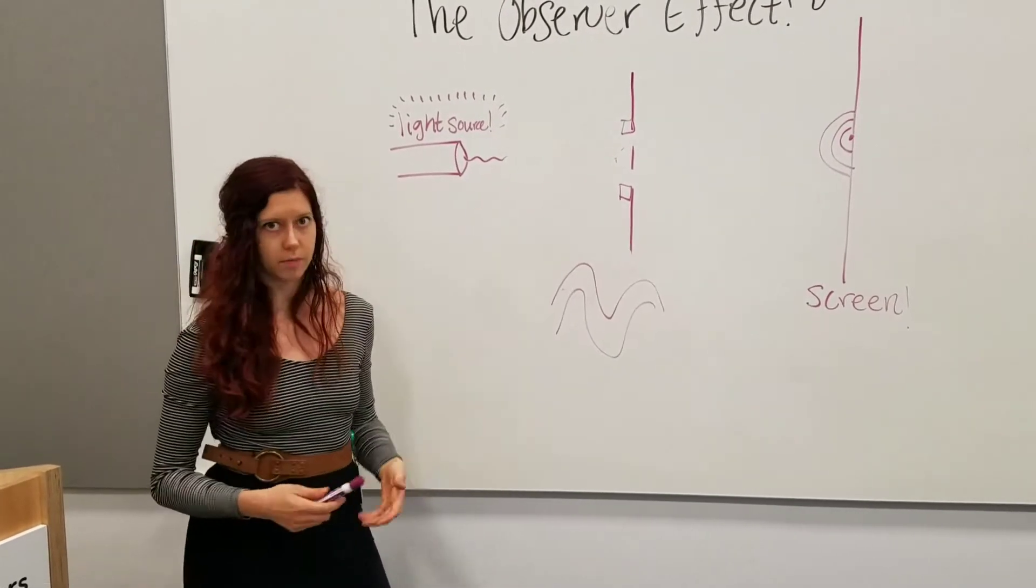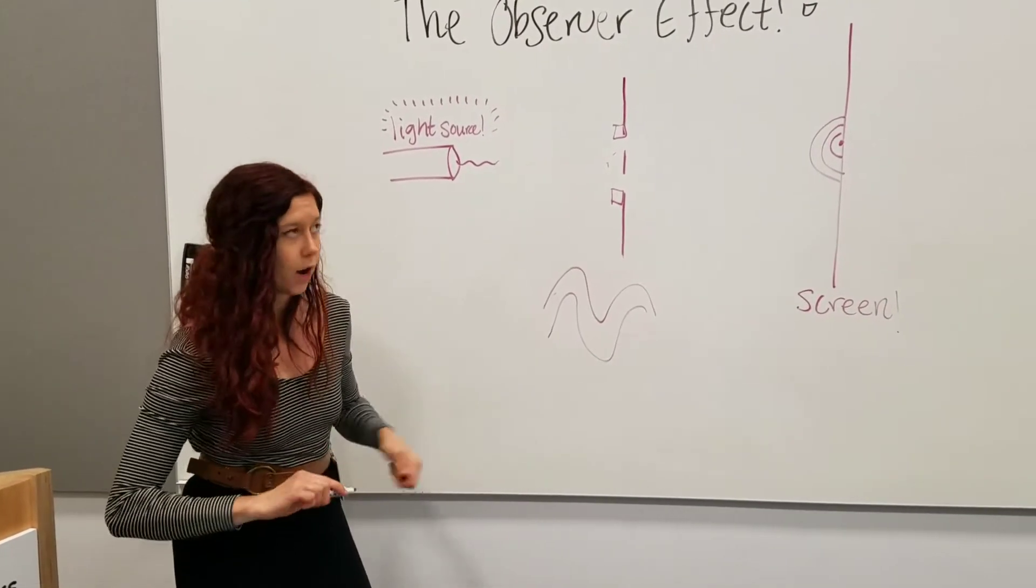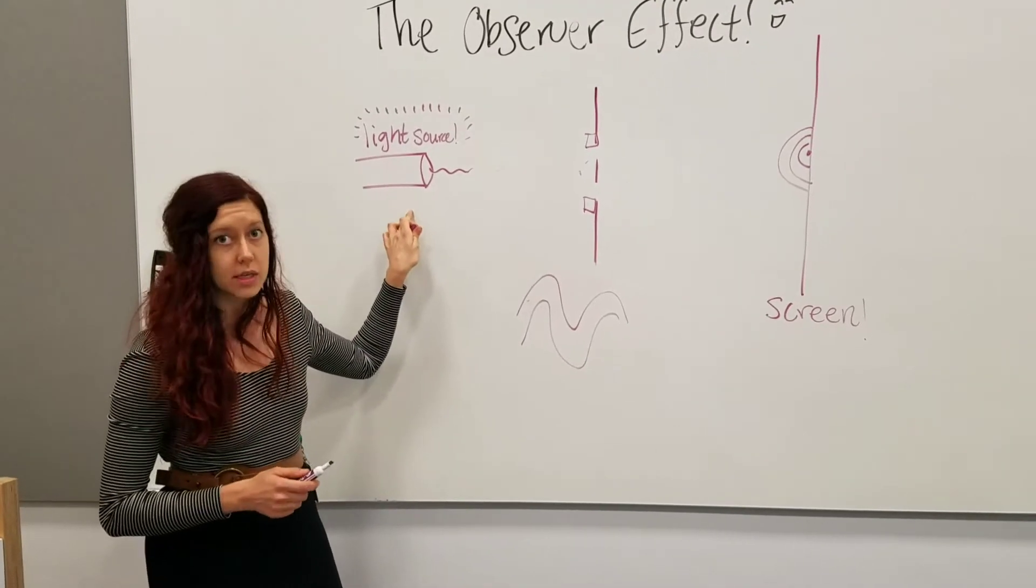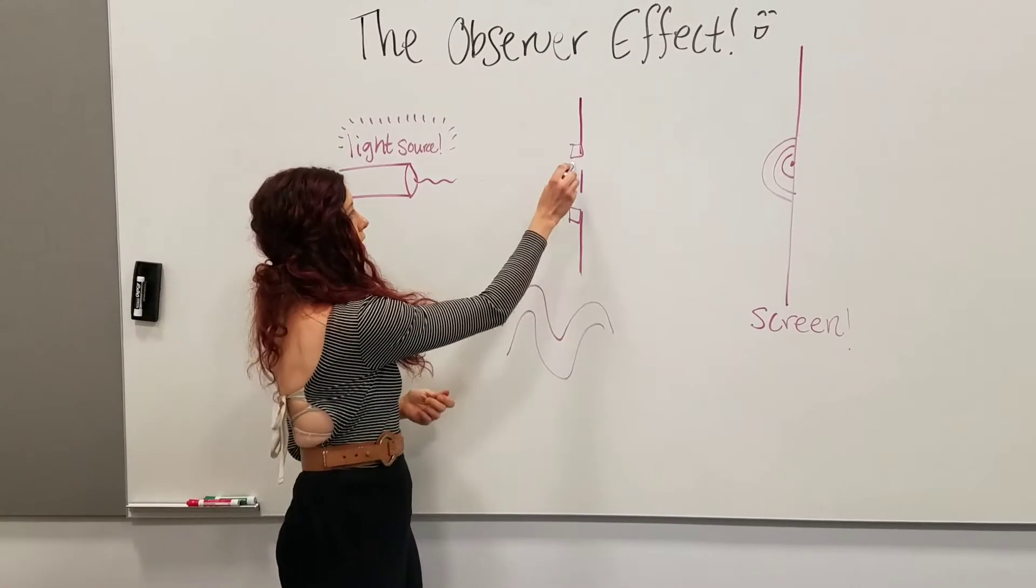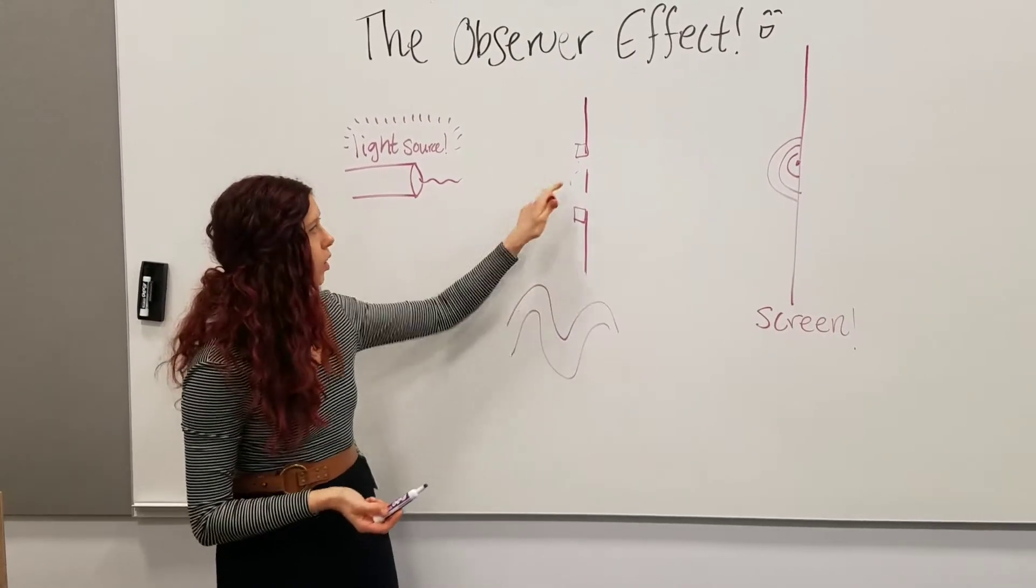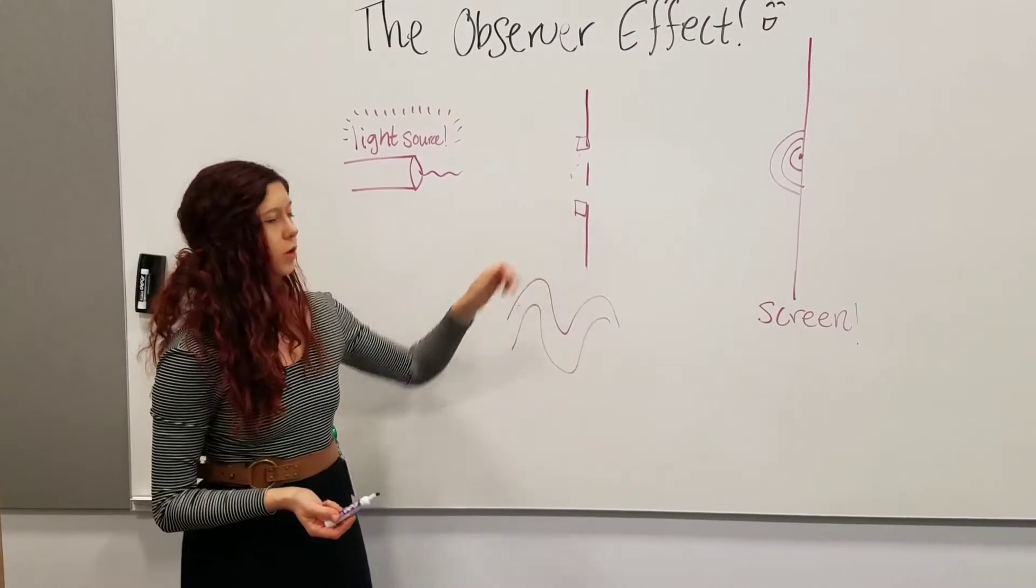Because that should be something that we should be able to figure out. If you can reduce the intensity of the light so that you only have one photon traveling at a time, these detectors should be able to tell you, okay, the photon went through here, or the photon went through here.